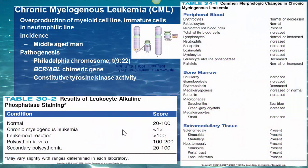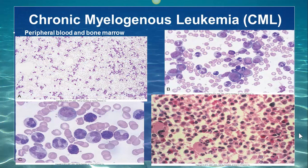In bone marrow, the increased hypercellularity is due to granulopoiesis. Myelocytes may be increased. Pseudo-Gaucher cells are often seen and are very similar to Gaucher cells — the macrophages that look like tissue paper. The image on the bottom right shows bone marrow hypercellularity with increased granulocytes and megakaryocytes.